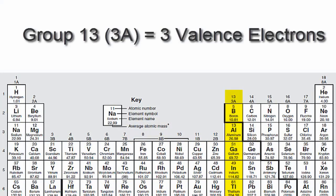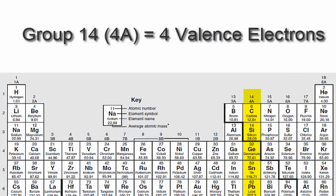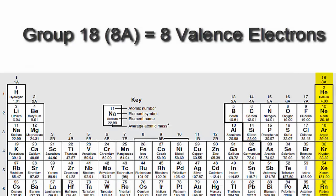We'll skip over the transition metals since they're a bit more complicated and probably don't apply to you. We'll go to 13 or 3A, which have three valence electrons, then 14 or 4A. Each of those elements in group 14 or 4A have four valence electrons, all the way up to group 18 or 8A, which have eight valence electrons.